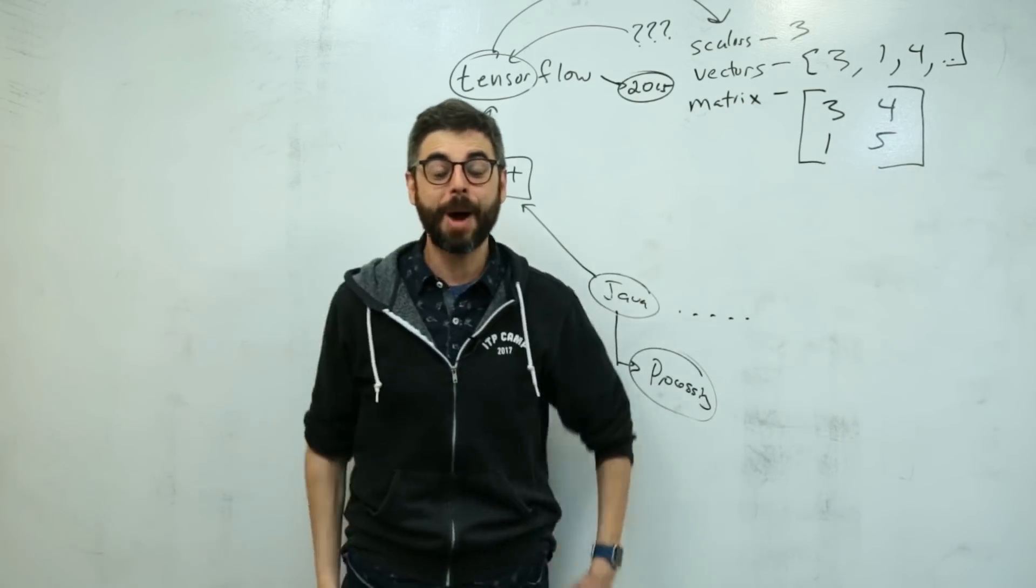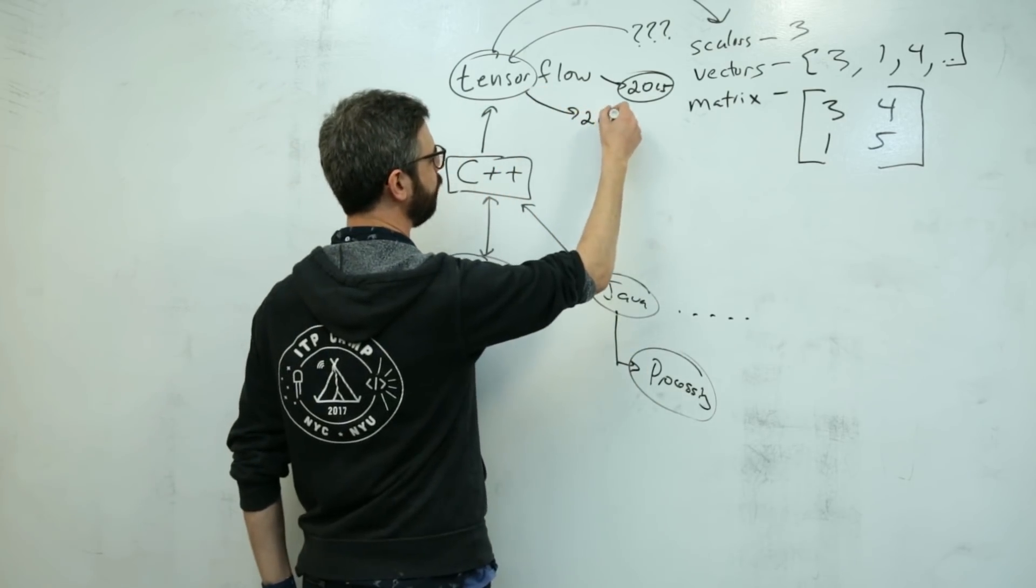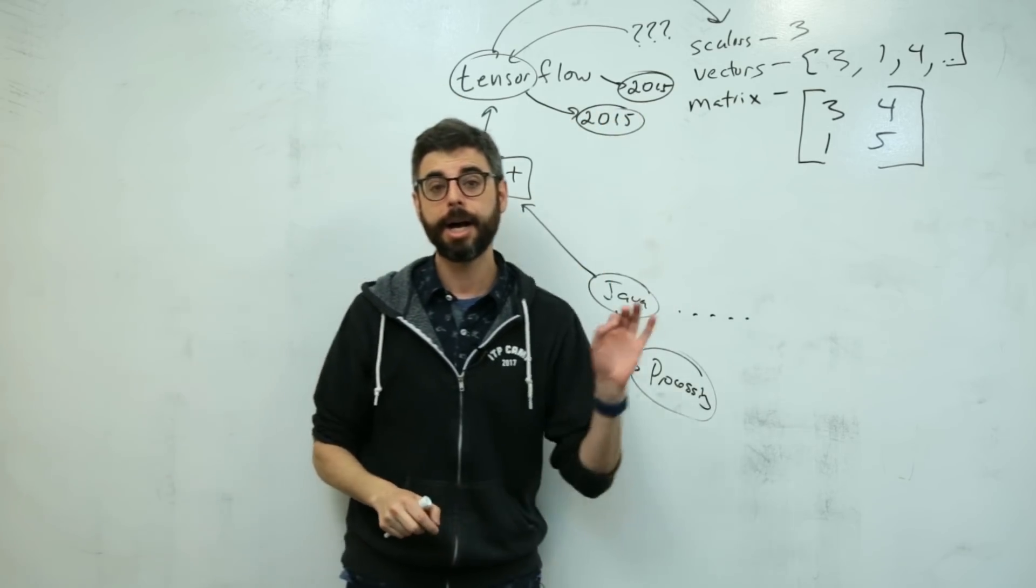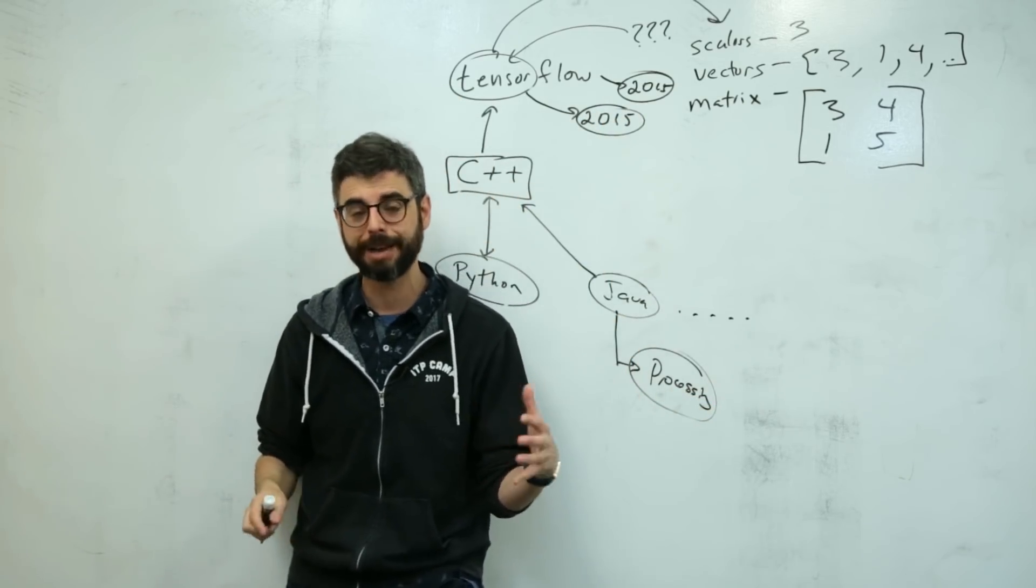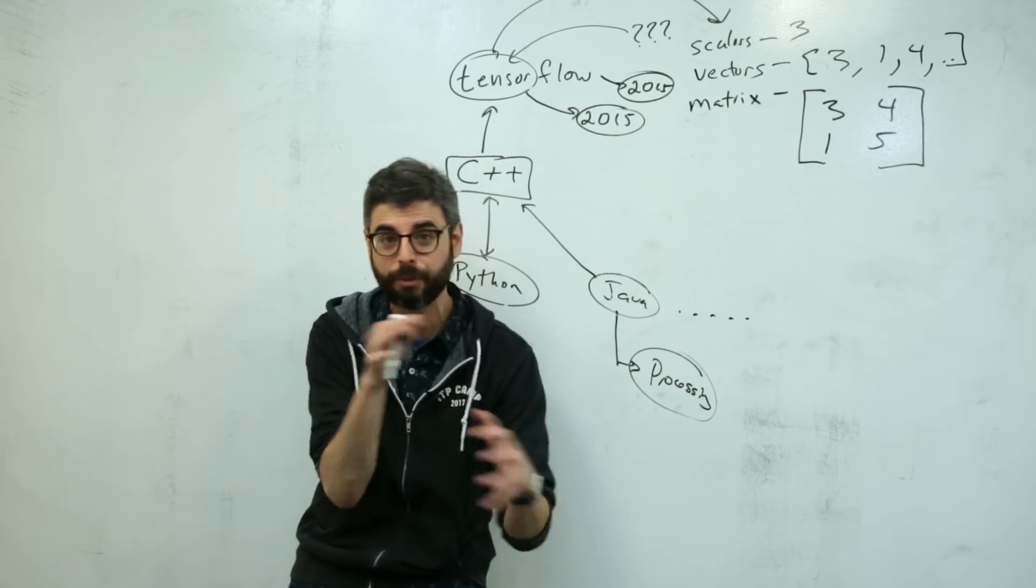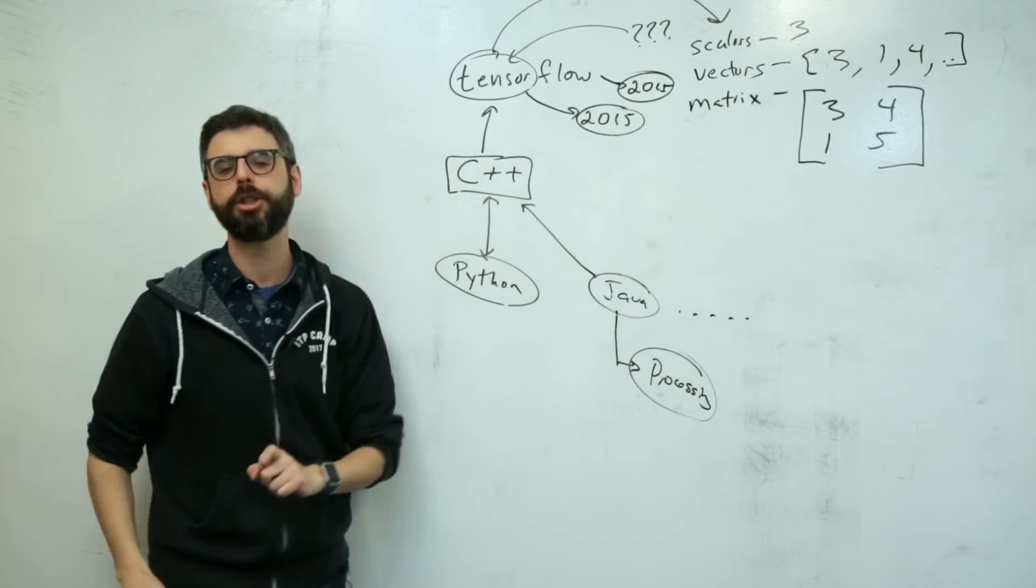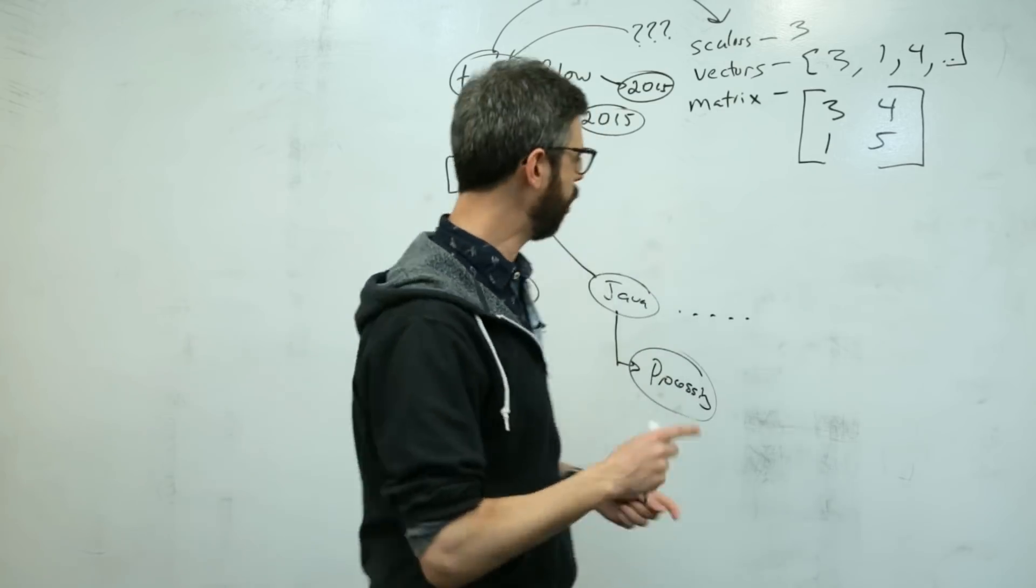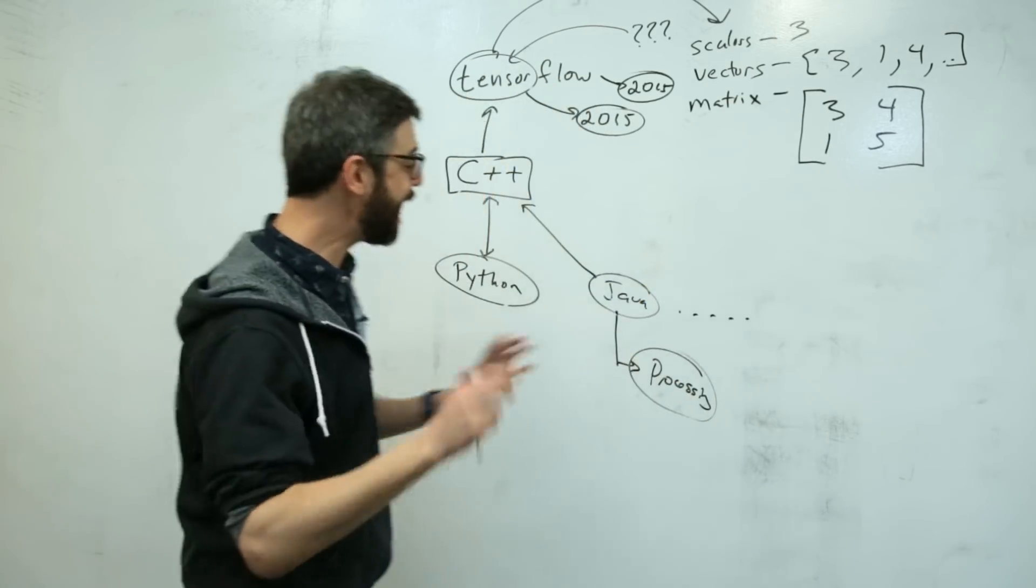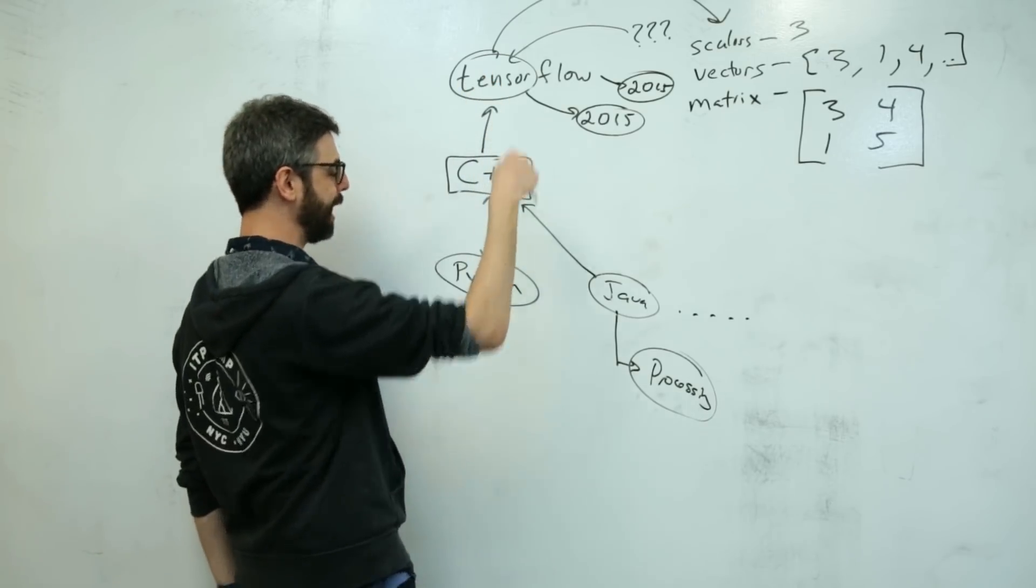TensorFlow was open sourced in 2015. So TensorFlow is a project, according to Wikipedia, started in 2011 as a proprietary machine learning library used at Google for doing all sorts of stuff with neural networks and deep learning and more. And then it was open sourced in 2015 under the Apache license.